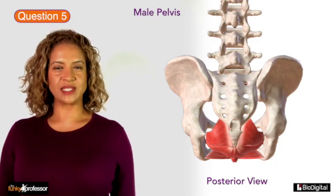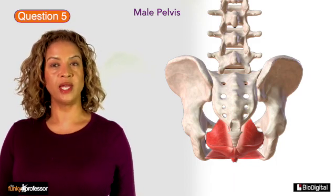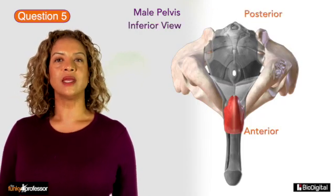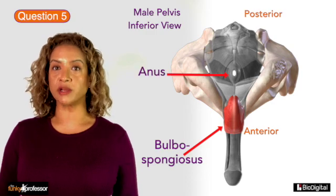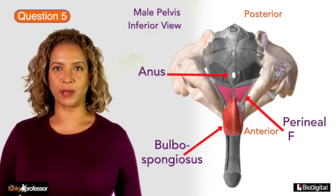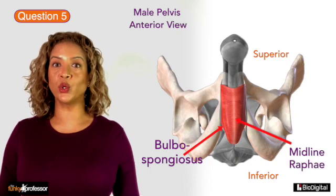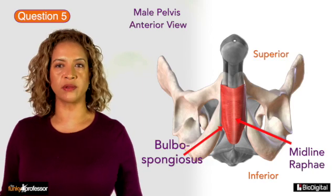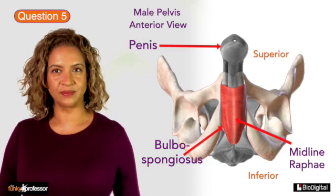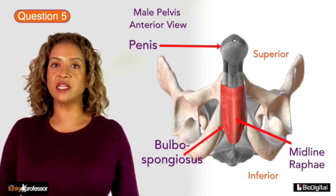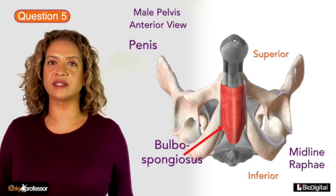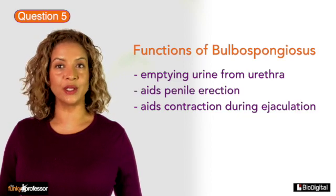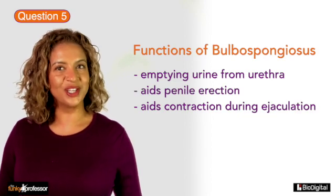Question 5. The bulbospongiosis is a paired muscle found just beneath the pelvic floor and is very different in males and females. In males, the bulbospongiosis is found in front of the anus and arises from the perineal body and the midline raphe over the corpus spongiosum. It runs anteriorly to attach to the corpora cavernosa of the penis, is continuous in its midline, and covers the bulb of the penis. It assists in emptying urine from the urethra and also aids in penile erection and contraction during ejaculation.